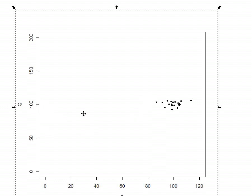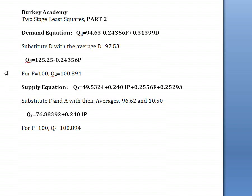The y-intercept that we had is 125.25, and this other point is price equals 100, quantity equals 100.894. So let me graph that for you.